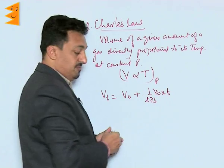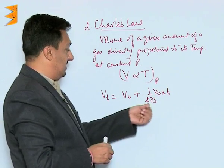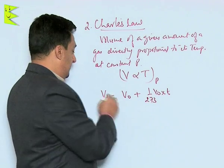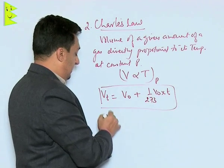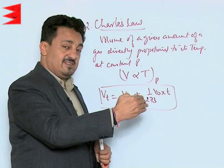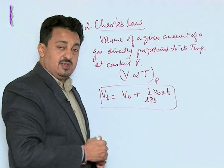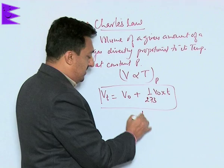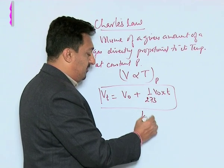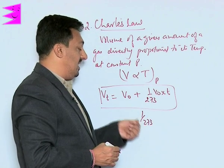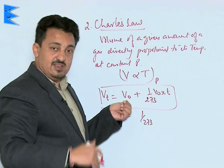This is V₀ times T - that's a better way of writing it down. What this means is that it was observed that with every degree Celsius rise or lowering of the temperature, 1 by 273 times of the volume...